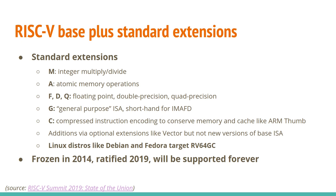There are also additional extensions being worked on such as vector processing, but these won't require a new base version of the ISA. Linux distros like Debian and Fedora are targeting specifically RV64GC — that's the base ISA and standard extensions that Linux distros are targeting. The base and standard extensions were frozen in 2014 and ratified in 2019. So if you compile a program now for RV64GC, 20 years from now on some powerful RISC-V processor, it'll still be able to run.